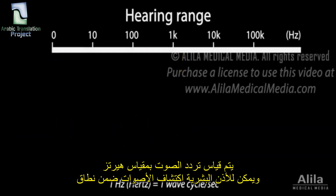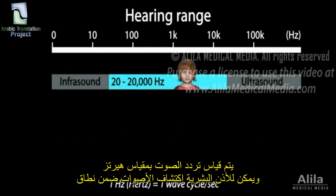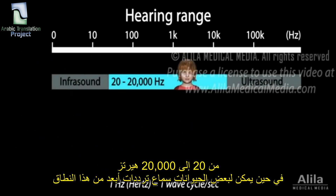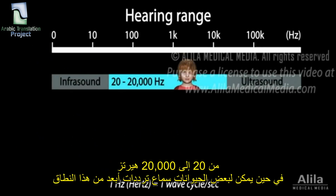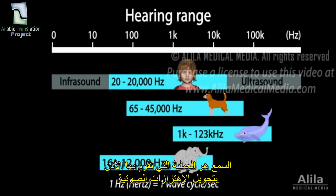Frequency is measured in hertz. A young human ear can detect sounds in the range of 20 to 20,000 hertz. Some animal species can hear frequencies well beyond this range.